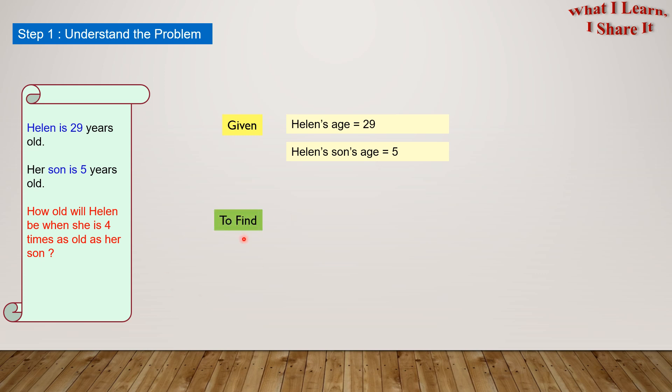What is there to find? We have to find out how old Helen will be when she is four times as old as her son. So in our own words, we can say age of Helen when she will become four times as old as her son.